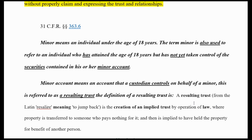Where property is transferred to someone who pays nothing for it, it is implied to have held the property for the benefit of another person. When you walk into court and give up the name without making a proper claim as to who you are as beneficiary, you're giving up all your property to them to bond, seize, and control. They will do so and make themselves beneficiary because you failed to do so. But when you make your claim, they cannot disprove that you are the rightful beneficial party. It's impossible to change — just like gravity.